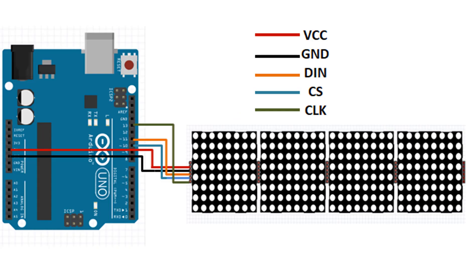Connect the LED matrix to Arduino according to the schematic. Connect the LED matrix VCC, GND, DIN, CS, and CLK pins to the corresponding Arduino pins, including Arduino digital pin 11.